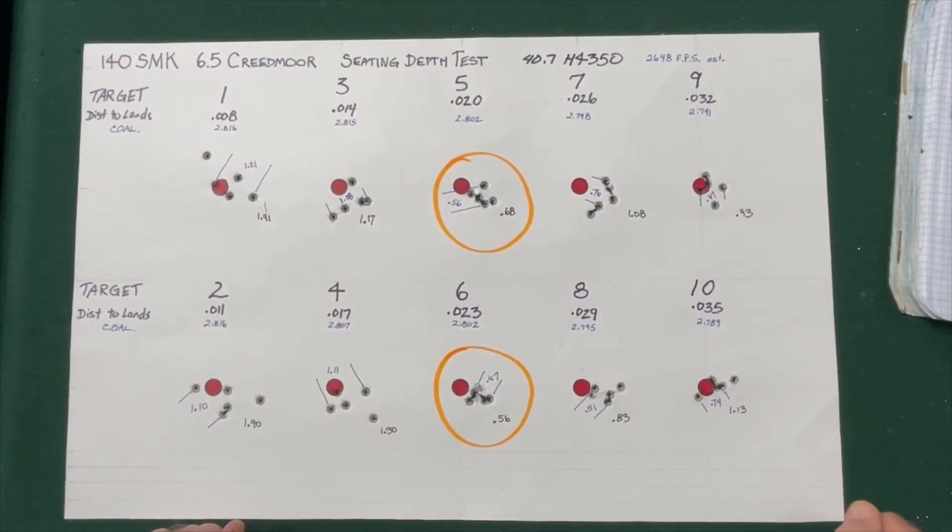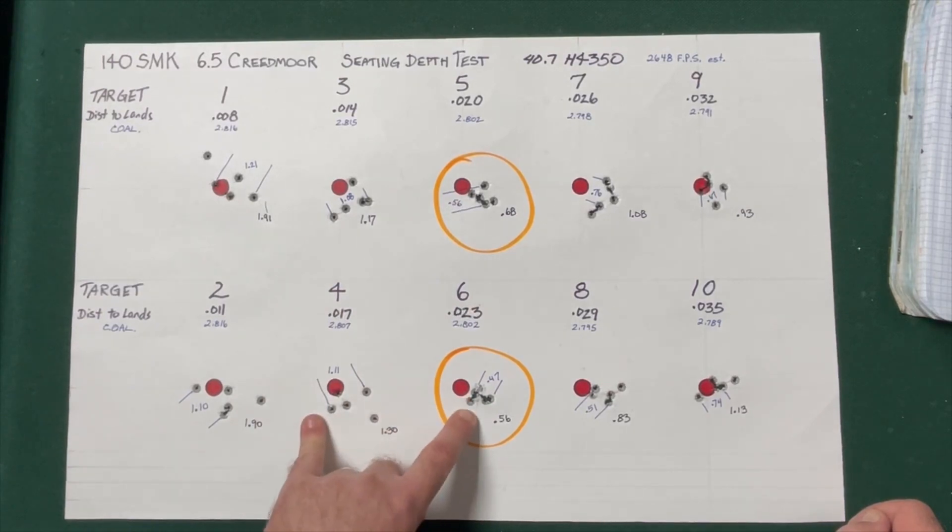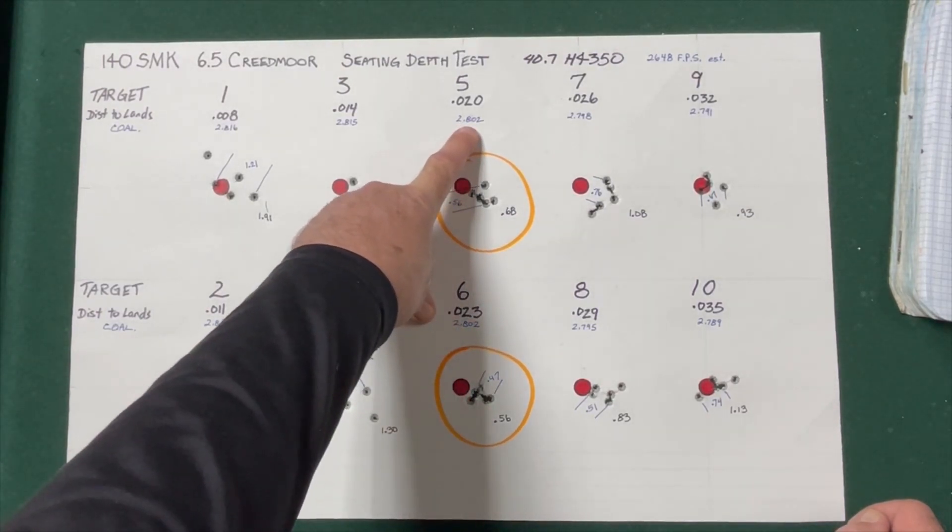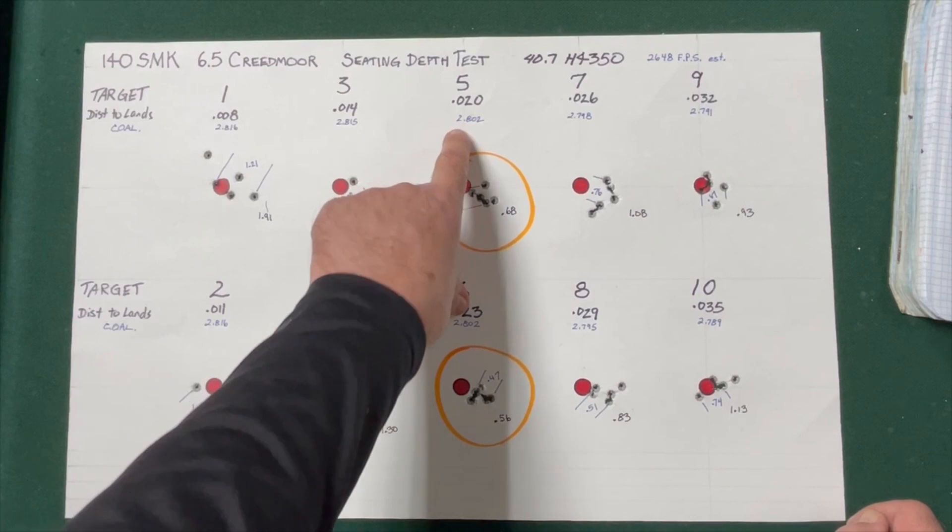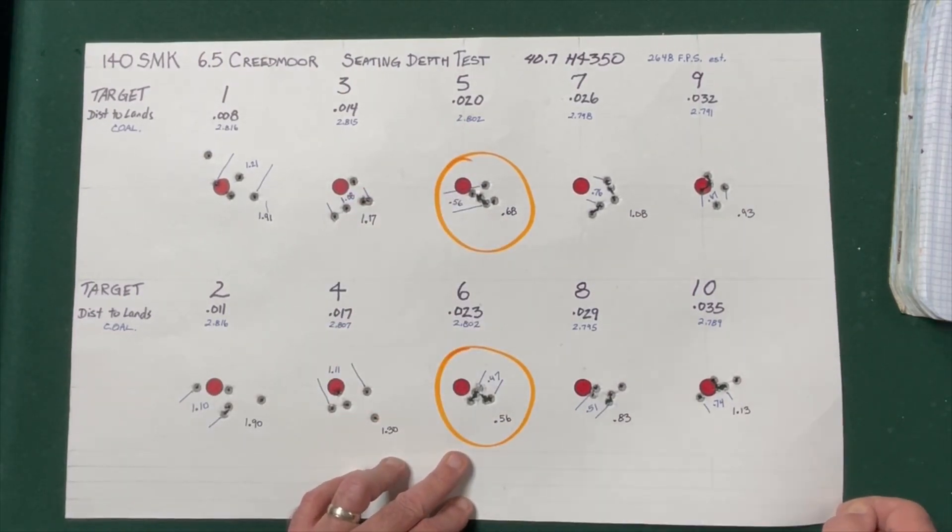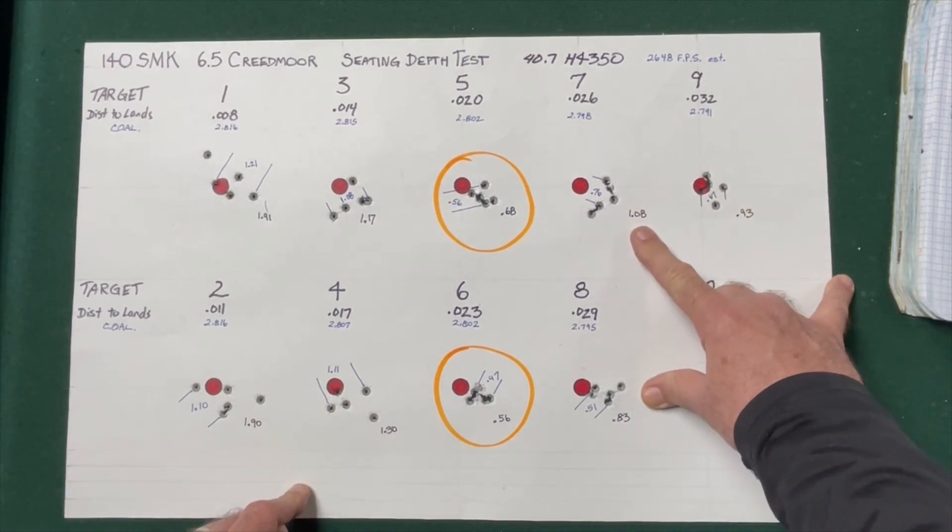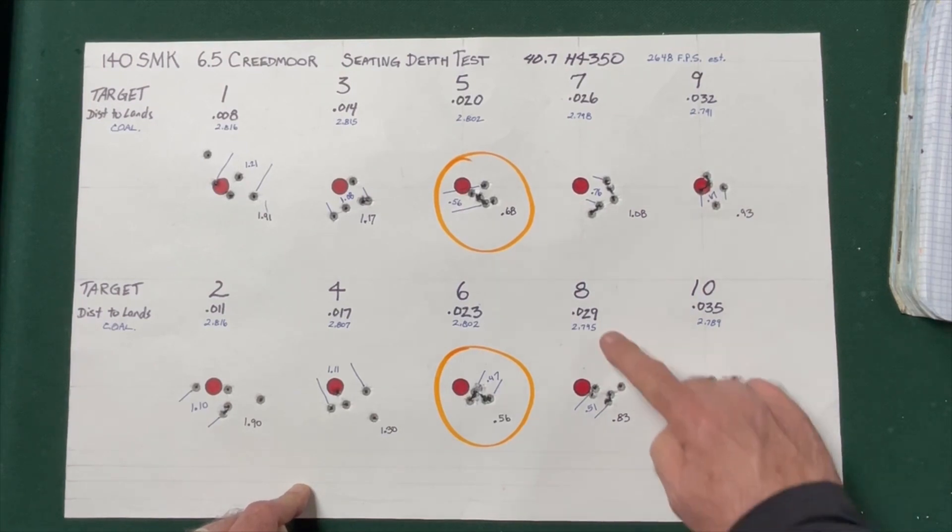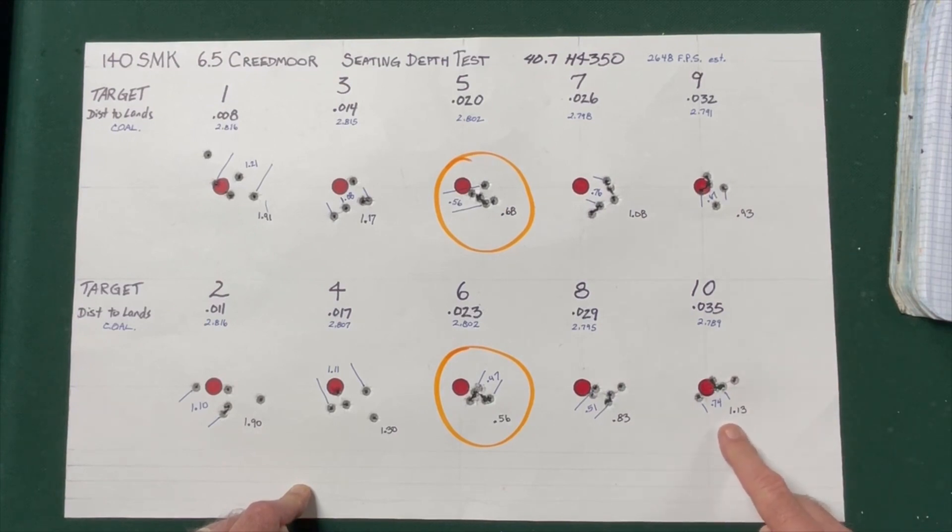Here on the 140 grain boattail hollow point match, you can see that the cartridge overall length recommended is 2.8 inches. I just found it fascinating that we talk a lot about seating depth and adjusting seating depth, but the best groups of the day were right at that recommended overall cartridge length. At 26 off the lands, we had an overall group size of 1.08. At 0.29 off the lands, we had an overall group size of 0.83. At 32 thousandths off, we had a group size of 0.93. And at 35 thousandths off, we had a group size of 1.13.